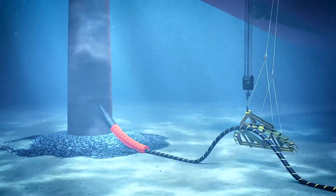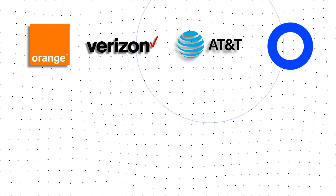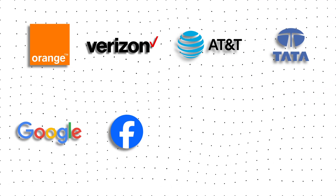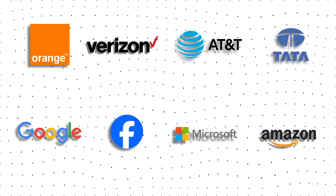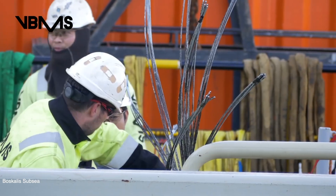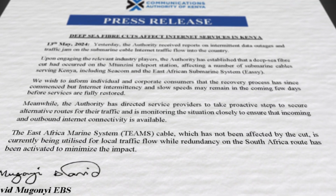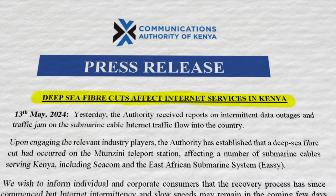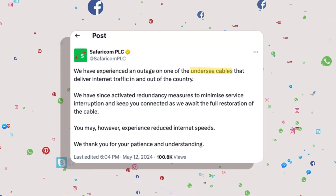Some widely known Tier 1 ISPs include Orange, Verizon, AT&T, and Tata. Companies that handle heavy internet traffic, such as Google, Facebook, Microsoft, and Amazon, also own private networks of undersea cables that they lease as a business product — in fact, a majority of undersea cables in the world are owned by these internet companies. Back to Kenya: the country experienced degraded internet quality in May, and local internet providers cited faults with undersea cables.